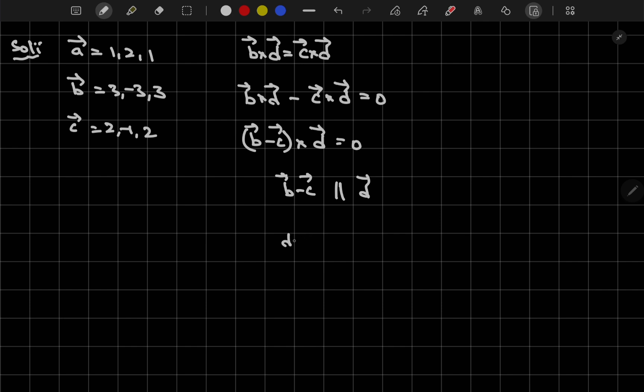Means D vector will be equal to lambda times of B vector minus C vector. So let me find B minus C value. B minus C value is 3 minus 2, 1 comma minus 3 plus 1 value minus 2 comma 3 minus 2 value is 1. Hence D vector is lambda times of 1 comma minus 2 comma 1.